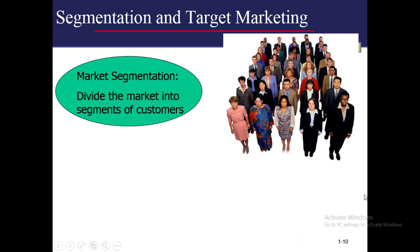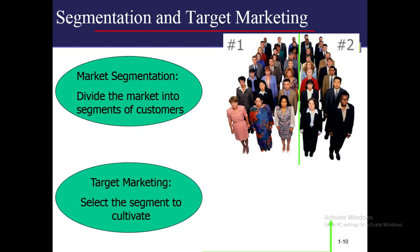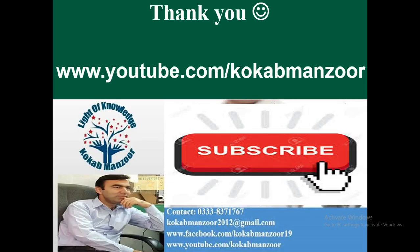So here is an example: this is the entire market — a mix of people. What we are doing is dividing it — this is segment one, this is segment two — and then we target one of the segments. This doesn't mean everyone is the same; we see what kind of product we are selling and target accordingly. Thank you very much, hope the concept is clear. If you like this video, please subscribe to the channel and share it. Thank you.